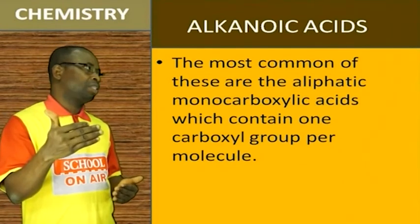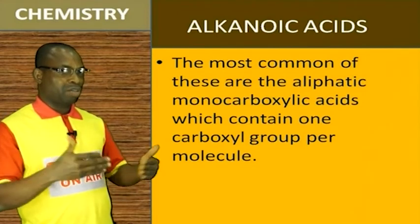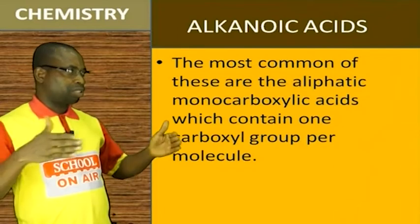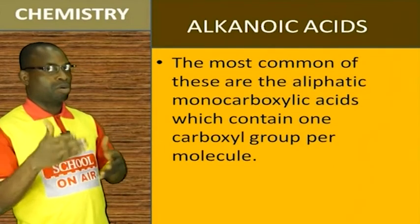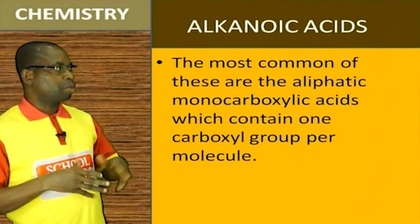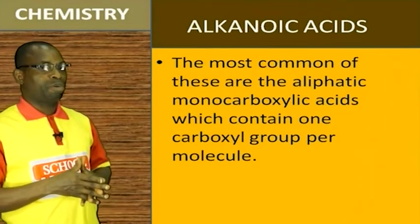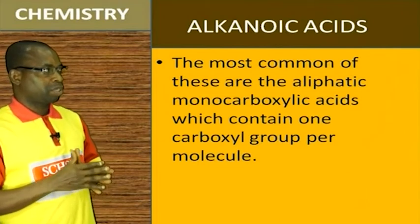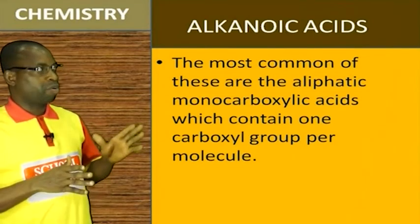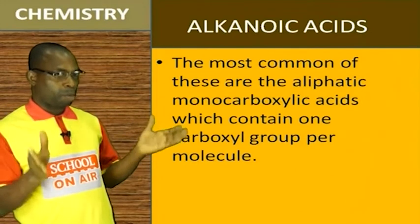You have aliphatic and you have aromatic. Aliphatic are those that occur in a chain — branched or straight — while aromatic are those that occur in a cycle, that's in a ring form. The most common are the aliphatic monocarboxylic acids, which contain only one carboxy group, that's one COOH, per molecule.